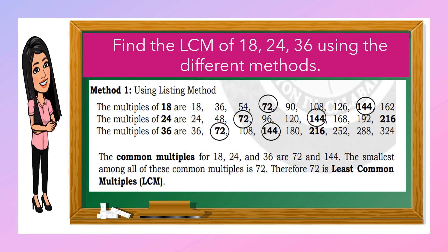As you can see, to get the LCM of the given number, we will use skip counting or multiply by 1, 2, 3, 4, 5, 6, 7, and so on, until you get the common multiples. So, the common multiples of 18, 24, and 36 are 72 and 144. The smallest among all of these common multiples is 72. So, 72 is the least common multiple or the LCM of 18, 24, and 36.